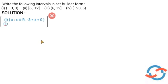Second question: what is a closed interval? Closed interval 6 and 12. So we have this formula: set of all x such that x belongs to R.